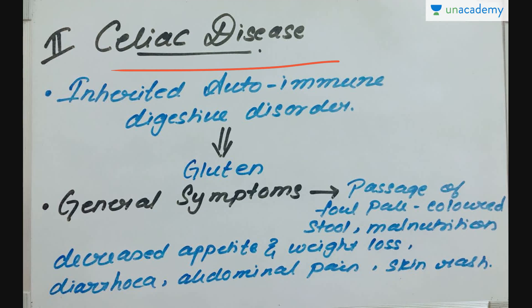Celiac disease is an inherited autoimmune digestive disorder in which people cannot tolerate gluten, a protein constituent of wheat, barley, and related grains. The general symptoms include passage of pale-colored stools, progressive malnutrition, diarrhea, decreased appetite and weight loss, multiple vitamin deficiencies, abdominal pain, skin rash, and defects in tooth enamel.